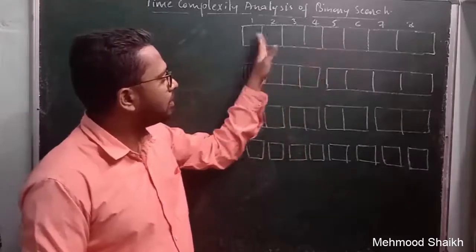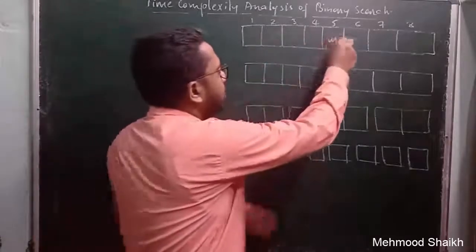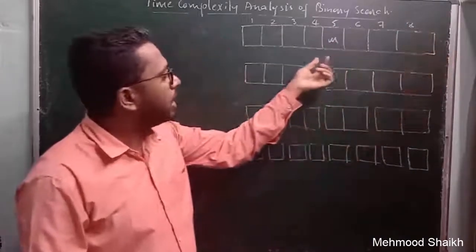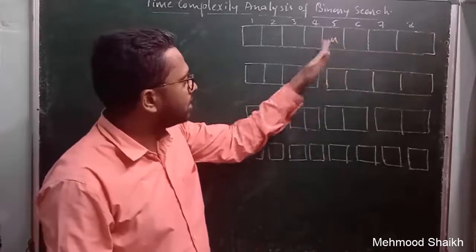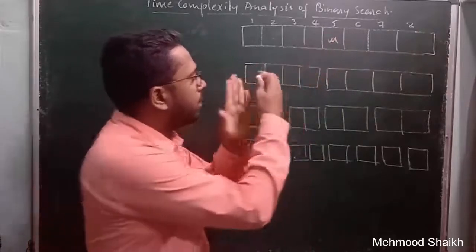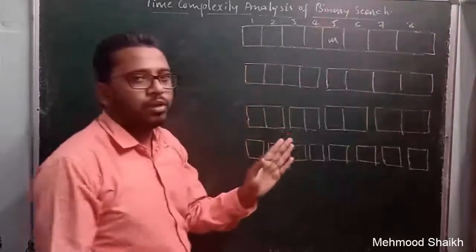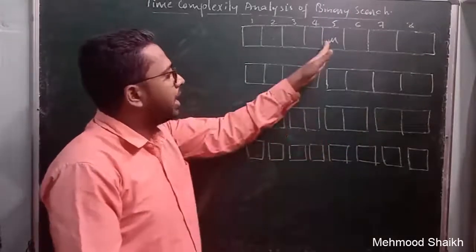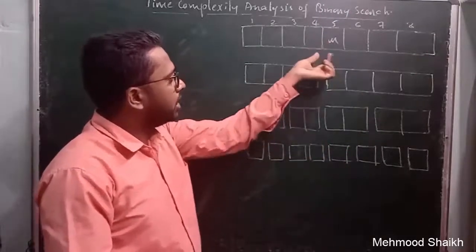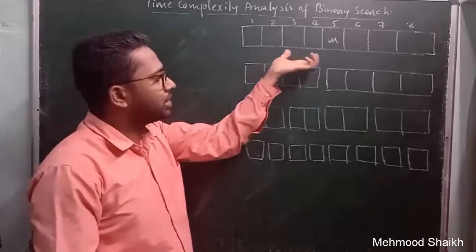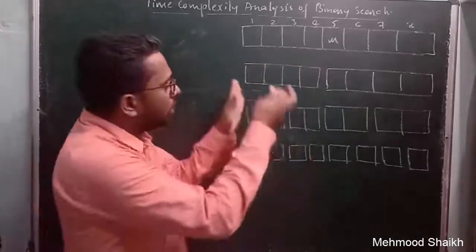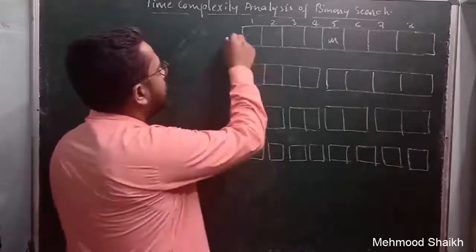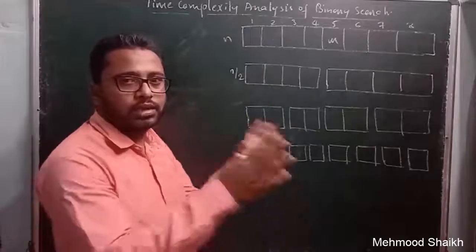If the element is not the middle element, it will be either on the left or right side of the middle element. If the element is less than the middle element, we completely discard half the problem, since we know the element is surely on the left side.